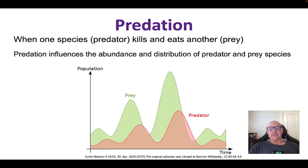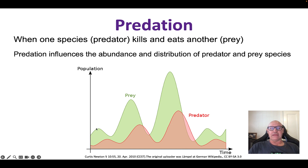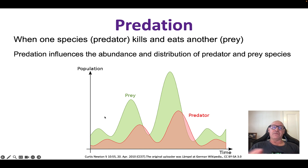This is what we call a predator-prey graph. You can see that with the interaction between the predator and the prey, their population — in other words, the abundance and distribution of both the predator and the prey species — vary. One influences the other.